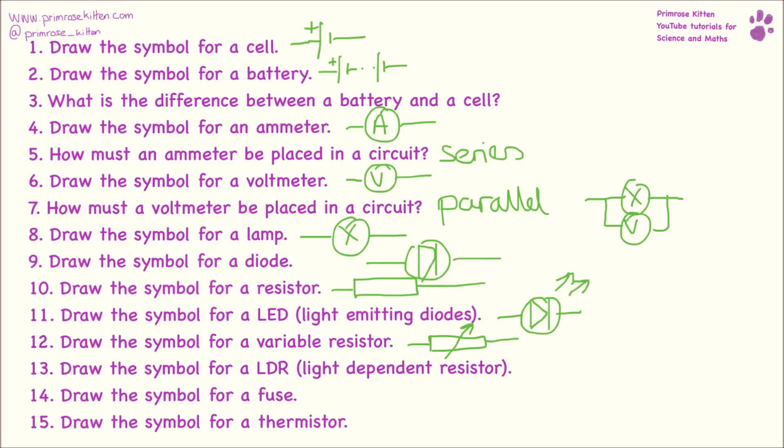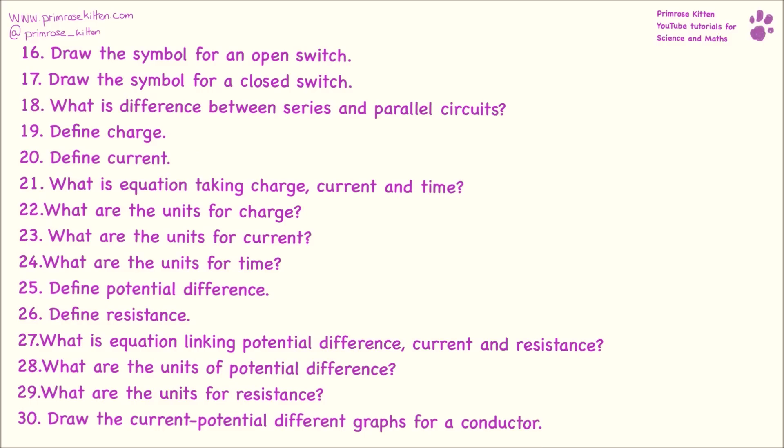Symbol for a light dependent resistor. And then because it is light dependent we need arrows coming in. Symbol for a fuse. Remember a fuse has a wire going all the way through it. Symbol for a thermistor. Draw the symbol for an open switch. Draw the symbol for a closed switch.